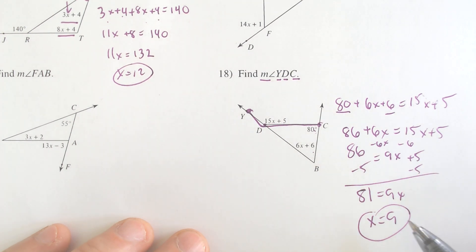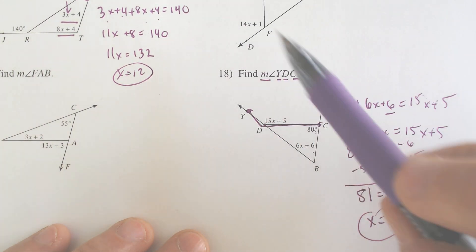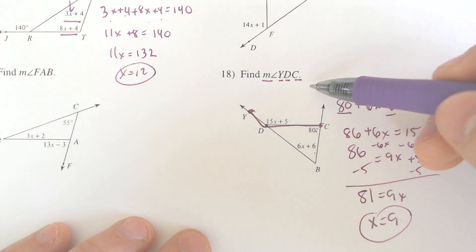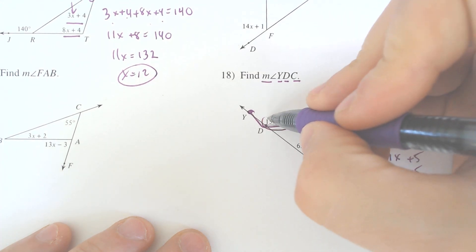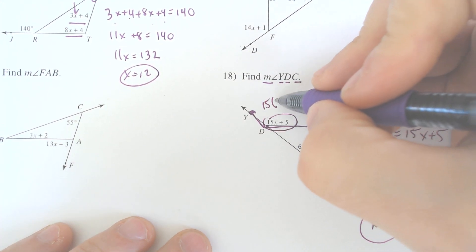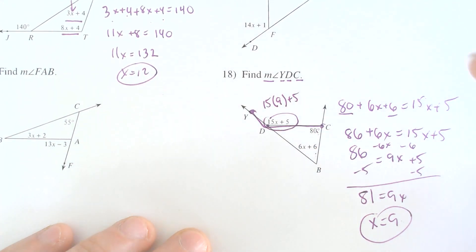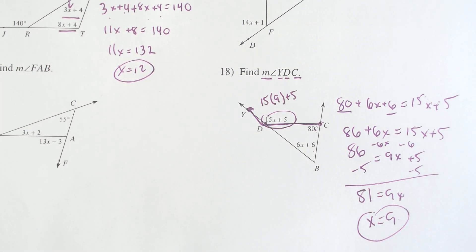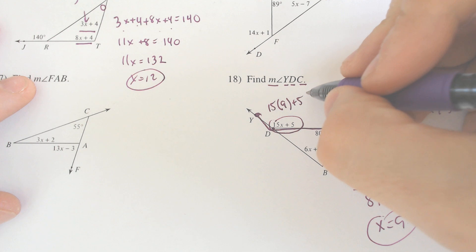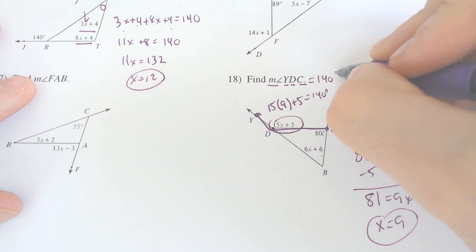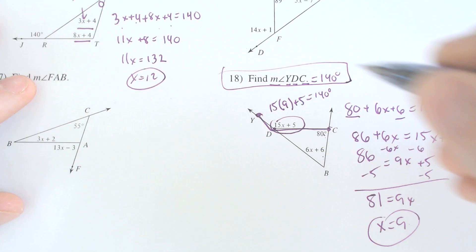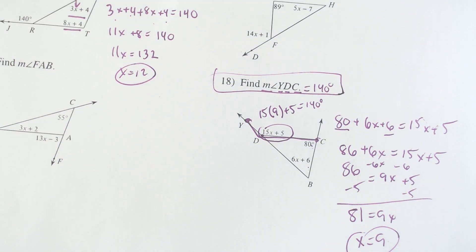But again, always make sure that you pay attention. You're not just finding x. We're finding angle YDC. That's this angle right here. So we have to plug in the x that we just found to get that. 15 times 9 plus 5. 15 times 9 plus 5 equals 140 degrees. So that means that the measure of angle YDC is 140 degrees.